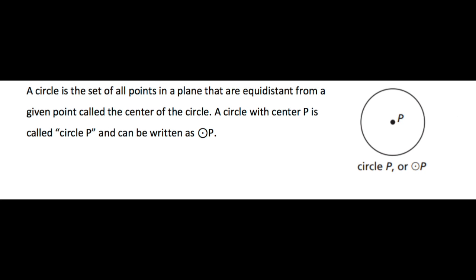We start by defining a circle as a set of all points in a plane that are equidistant from a given point, called the center of the circle. A circle with center P is called circle P and can be written as a circle with a dot and then the capital P beside it, as you can see in the diagram.